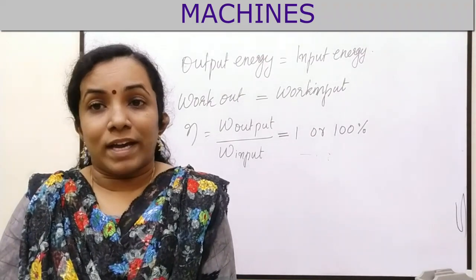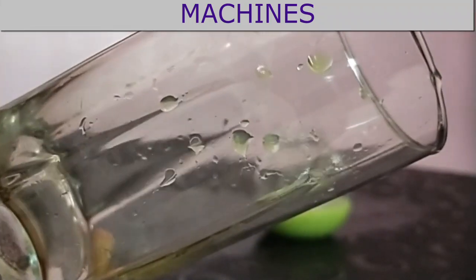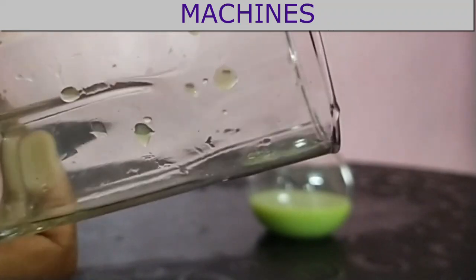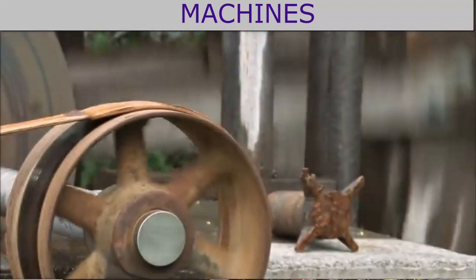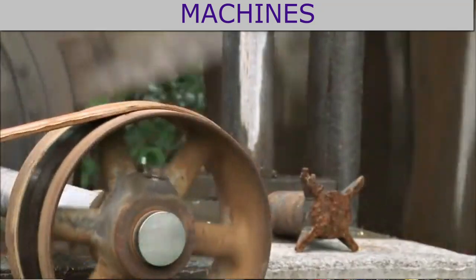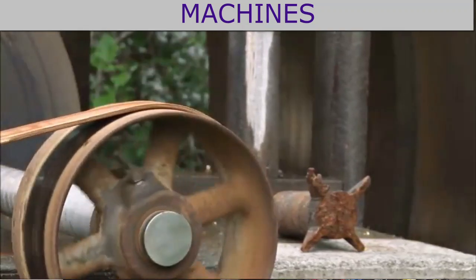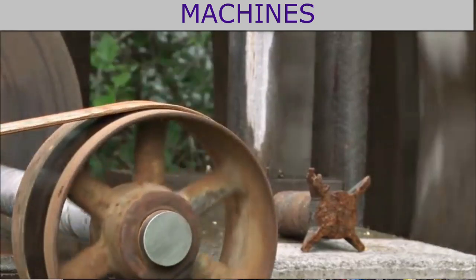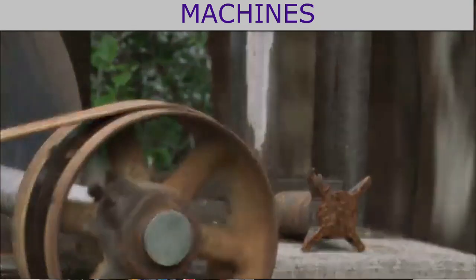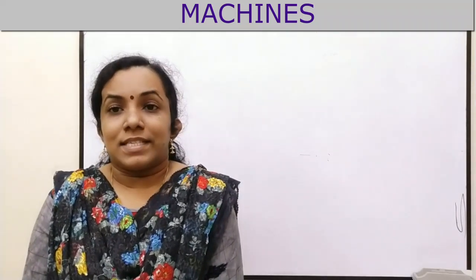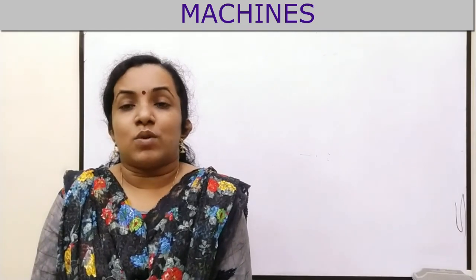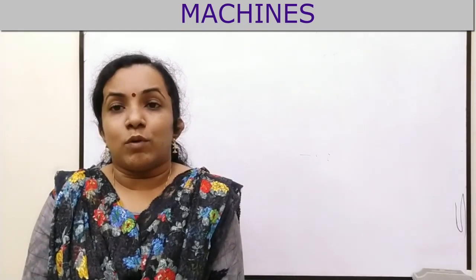Now, what about the real case? If you observe the glass closely, you can see some water sticks on the walls. That means the water in the tumbler is a little less than that of the glass. The same thing happens with machines. In all machines, a small amount of energy is utilized to overcome friction or the weight of the moving parts. That energy is lost since it will not come as output energy. Hence, in an actual machine, output energy will always be less than input energy.